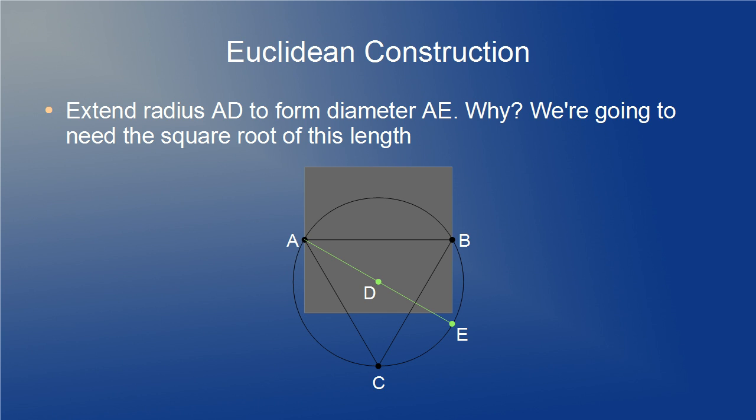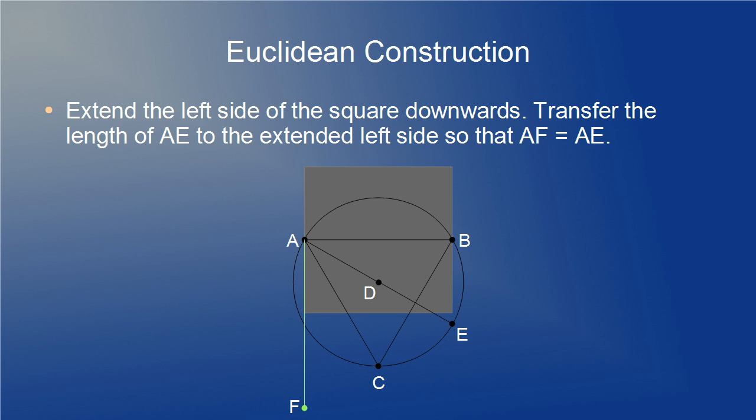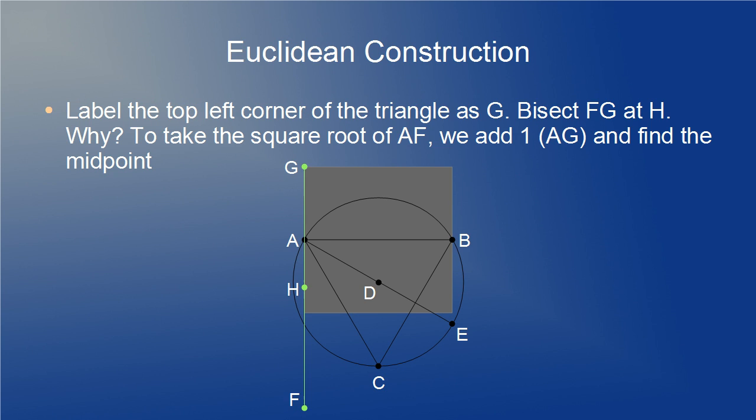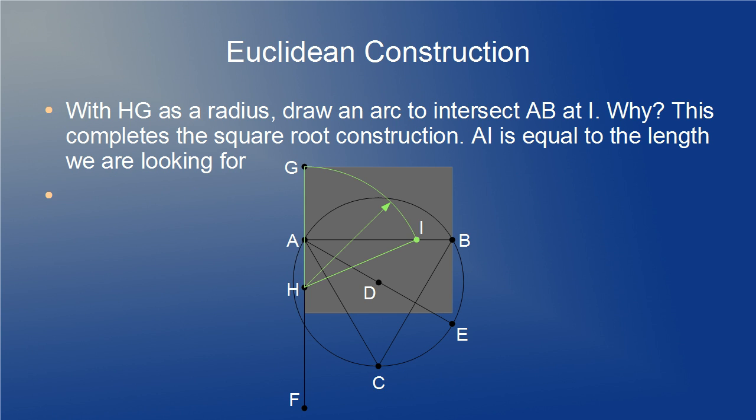For the square root construction, we need to add a segment of length 1 to the segment AE and that will be done by transferring its length to an extension of the left side as shown at AF. Then the next step in the square root construction will involve bisecting the segment GF at H. Then with HG as a radius, draw an arc to intersect AB at I. This completes the square root construction and AI is equal to the length between A and X which is 2 over the fourth root of 3.